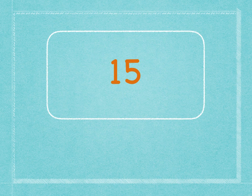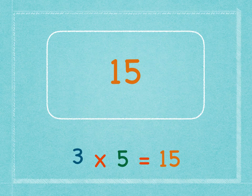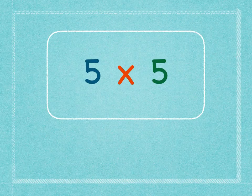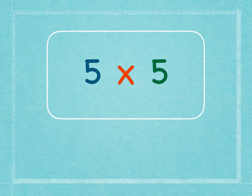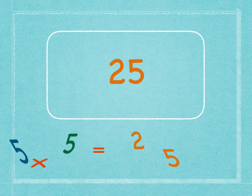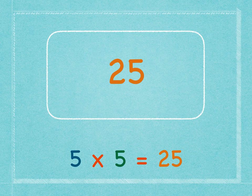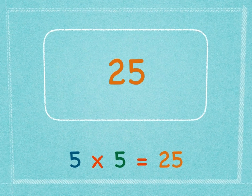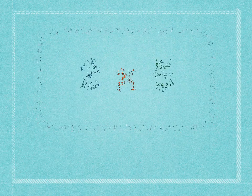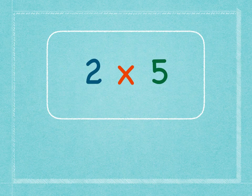Three times five is fifteen. Three times five is fifteen. Five times five is twenty-five. Five times five is twenty-five.